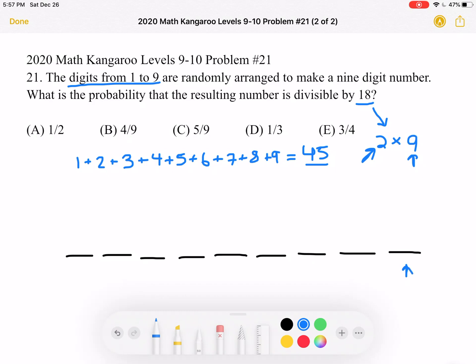So in this case, what are even numbers? We have 2, 4, 6, or 8. So we have four different possibilities for the last number out of a total of nine options for that last digit.